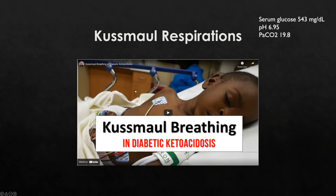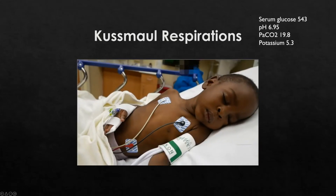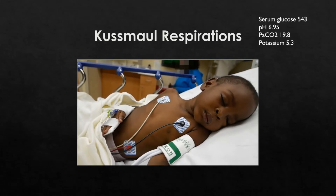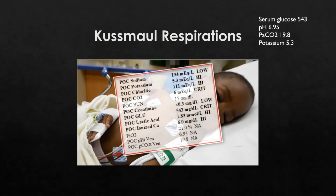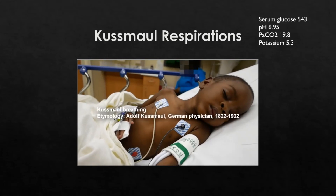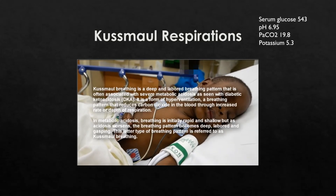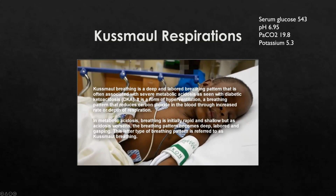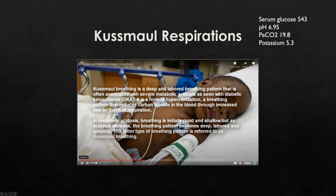We've mentioned Kussmaul respirations as they appear in a client with diabetic ketoacidosis. Now let's watch this pediatric patient display this type of breathing. This little guy is a known insulin-dependent diabetic who has come in with a pH of around 6.9. He likely has a dental abscess that has kicked off the episode. His breathing is what we call Kussmaul breathing, and when you smell his breath, it has a very sweet acetone-ketone sort of odor. He's receiving fluid at 20 mL per kilogram and will be started on 0.1 units per kilogram per hour of insulin, then going up to the intensive care unit.